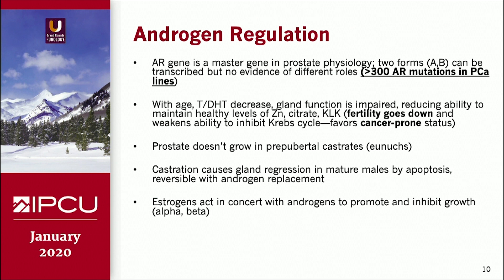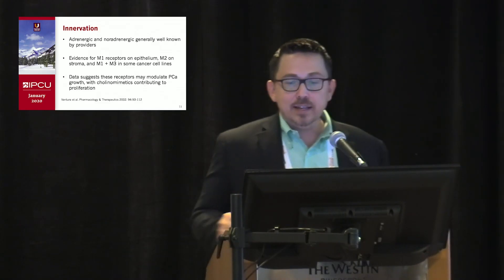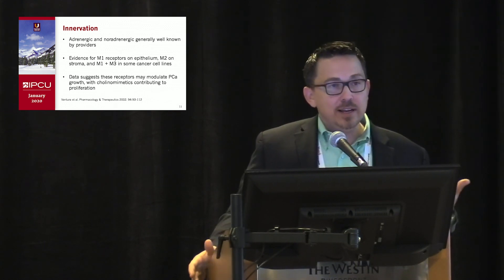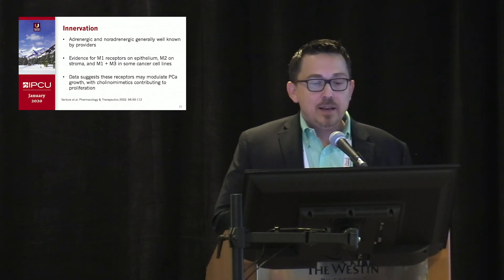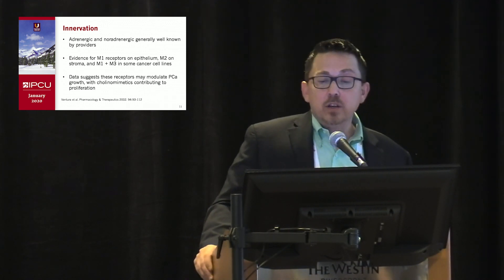DHT has a higher binding affinity for the androgen receptor, goes to the nucleus as a complex, and leads to transcription. The androgen receptor gene is a master gene with two forms, and many mutations have been identified in prostate cancer lines. As we age, testosterone and DHT levels go down, impairing the prostate's ability to maintain healthy levels of zinc and citrate and weakening its ability to inhibit the Krebs cycle — favoring a cancer-prone status. Castration before puberty prevents prostate growth; giving androgens back causes gland enlargement. Growth is a joint process modulated by both androgens and estrogens. Regarding innervation, adrenergic and noradrenergic receptors are familiar from BPH treatment, but muscarinic receptors also exist on the epithelium, within the stroma, and in certain cancer cell lines. Data suggests these receptors may modulate prostate cancer growth, and cholinomimetics have been shown to contribute to proliferation.